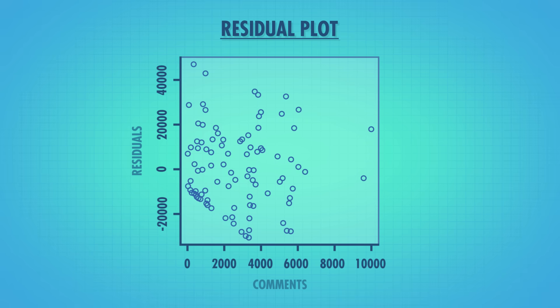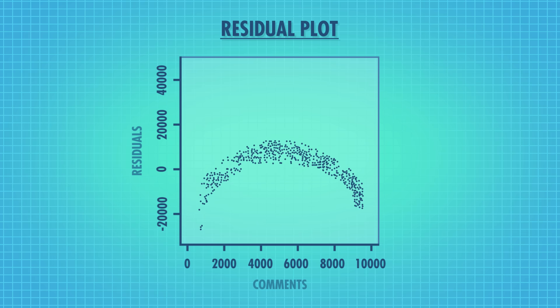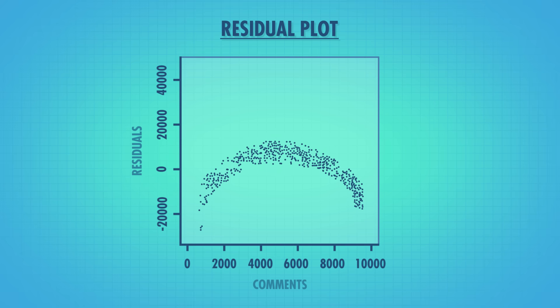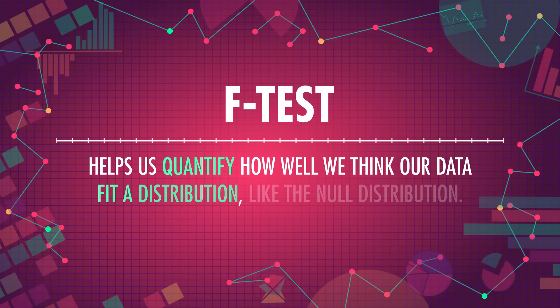We want a pretty evenly spaced cloud of residuals. Ideally, we don't want them to be extreme in some areas and close to zero in others. It's especially concerning if you can see a weird pattern in your residuals, which would indicate that the error of your predictions is dependent on how big your predictor variable value is. That would be like if our YouTube model was pretty accurate at predicting the number of likes for videos with very few comments, but was wildly inaccurate on videos with lots of comments. Now that we've looked at this error, this is where statistical tests come in. There are actually two common ways to do a null hypothesis significance test on a regression coefficient. Today we'll cover the F-test, which, like the T-test, helps us quantify how well we think our data fit a distribution, like the null distribution.